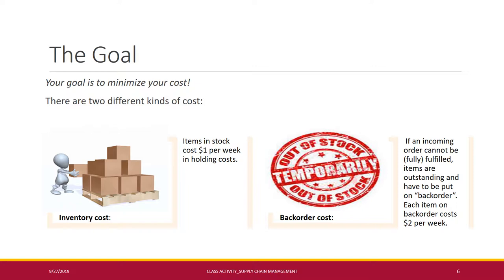Items in stock cost around $1 per week in holding cost. Any ending inventory or holding cost is $1 per week. For back order cost: if there is an incoming order you cannot fulfill fully, those outstanding items go on the back order list, and each item on back order costs around $2 per week. Think about how much quantity you need to order so there is no overstock and no understock — how you can manage your cost based on order quantity. That is your goal: minimize your cost.